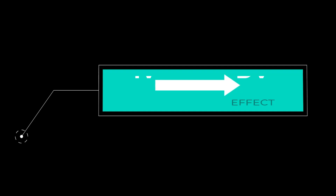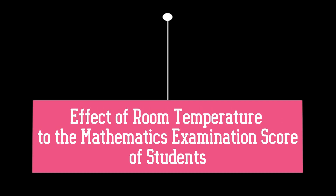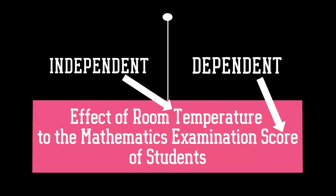These two variables demonstrate a cause and effect in the study. The independent variable is the cause — its value is independent from other variables in your study. The dependent variable is the effect — its value depends on changes in the independent variable. For example, in a study on the effect of room temperature on mathematics examination scores: the independent variable is the room temperature, varied by making it cooler for half the participants and warmer for the other half. The dependent variable is the math test scores, measured using a standardized test.